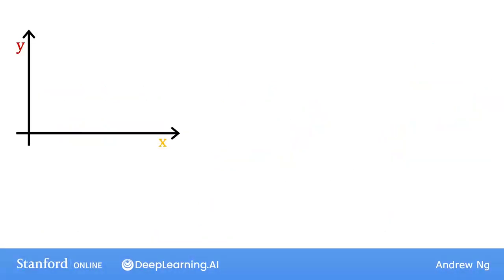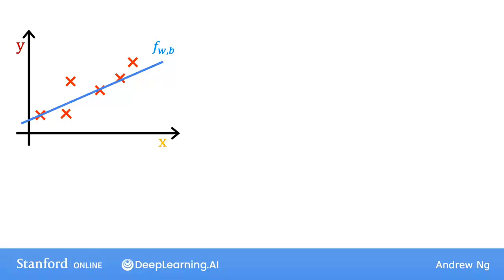Recall that you have a training set like the one shown here. With linear regression, what you want to do is to choose values for the parameters w and b so that the straight line you get from the function f somehow fits the data well. Visually, you can think of this to mean that the line defined by f is roughly passing through or somewhat close to the training examples, as compared to other possible lines that are not as close to these points.